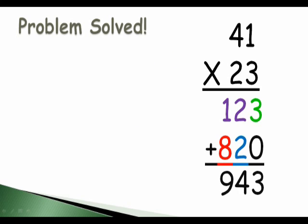Another way to say this is 41 times 23 is 943. Or the product of 41 times 23 is 943.